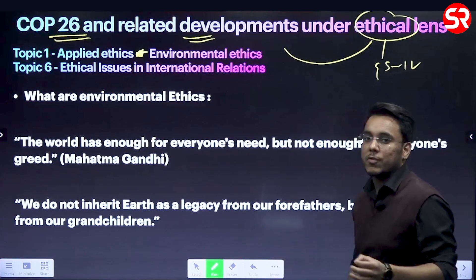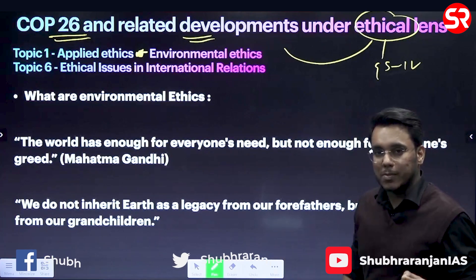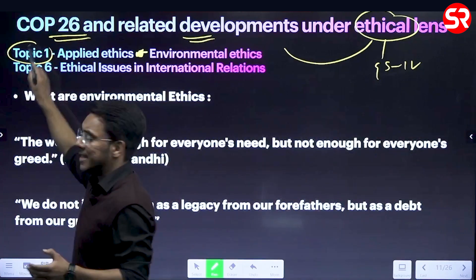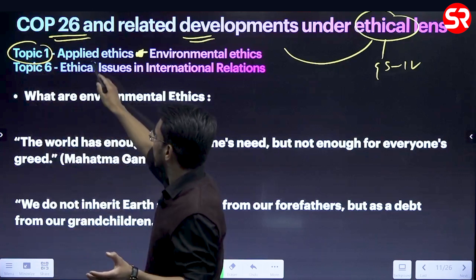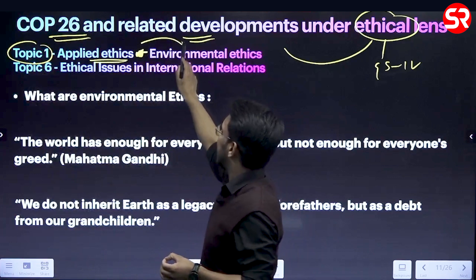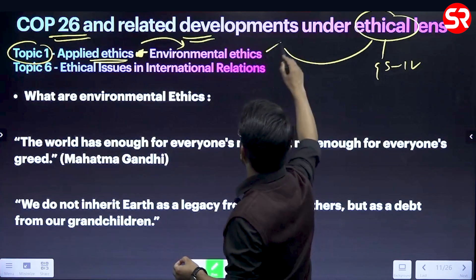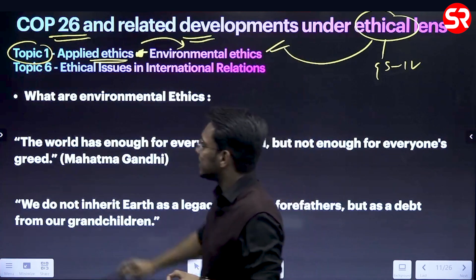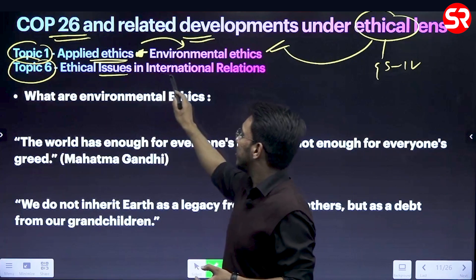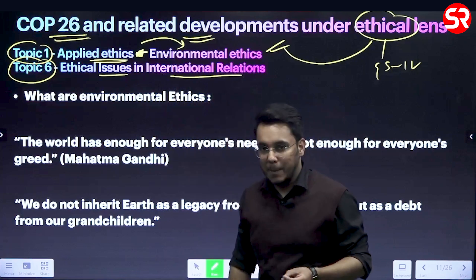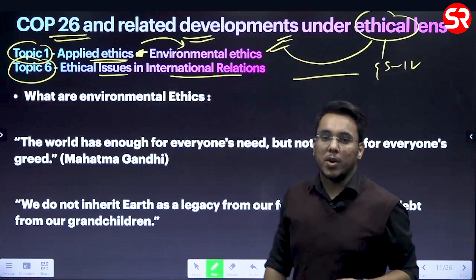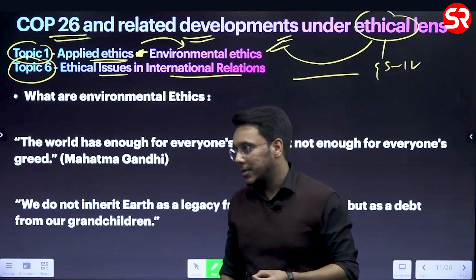This topic will be important under GS Paper 4, Topic 1, which covers applied ethics. Within applied ethics there is environmental ethics, so this topic is important there. Secondly, it will be important under Topic 6, where ethical issues in international relations are mentioned. So under Topic 1 and Topic 6 of GS Paper 4, this discussion will be relevant.